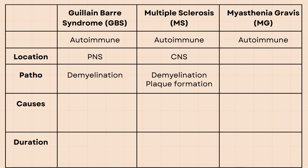Myasthenia gravis, on the other hand, occurs in the neuromuscular junction, or NMJ, of the skeletal muscles and blocks acetylcholine receptors, resulting in muscle weakness.